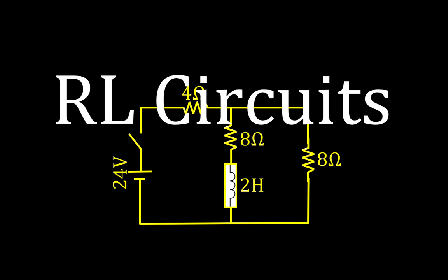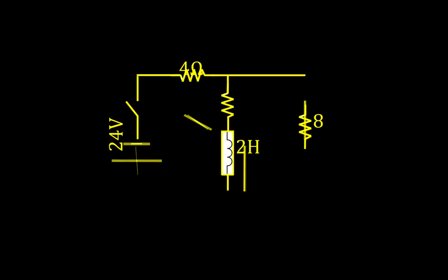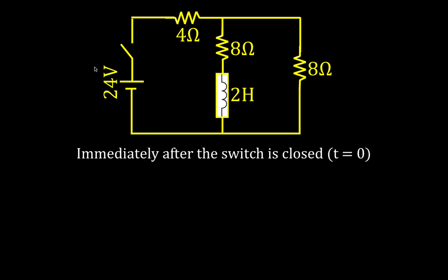We have another video here for RL circuits. This is the circuit we're going to be looking at: a 24-volt DC source, a 4-ohm resistor, and two 8-ohm resistors in parallel. In that parallel branch, we also have an inductor L, which is 2 Henrys. We're going to analyze this circuit at 4 different points in time.